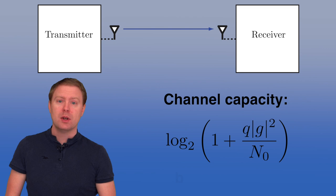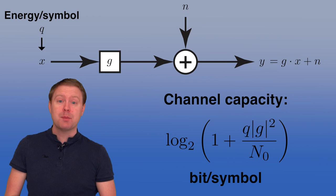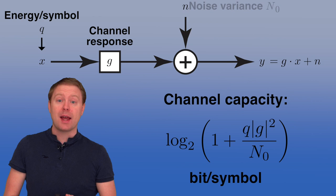The signal-to-noise ratio is the transmit power Q, measured in energy per symbol, multiplied by the absolute value squared of G, which is the channel response. Then we divide that by N0, which is the noise variance.